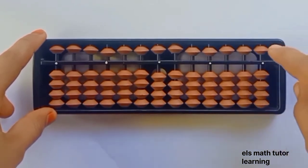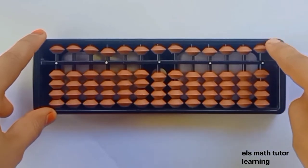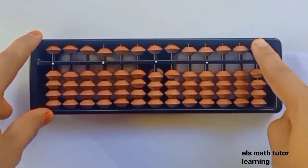First, upper bead is also called a heaven bead. Each has a value of five.